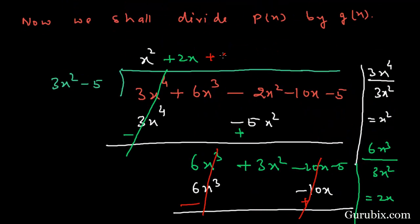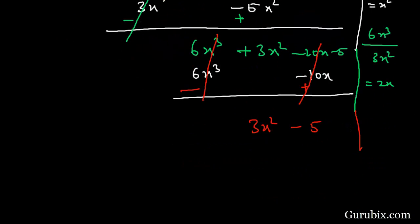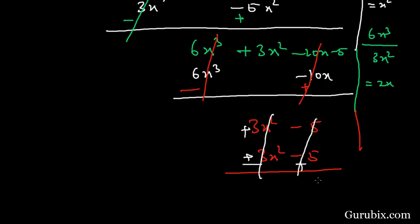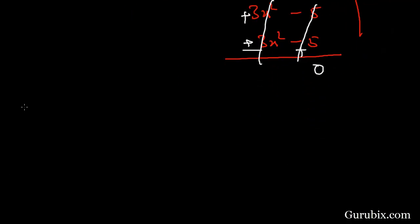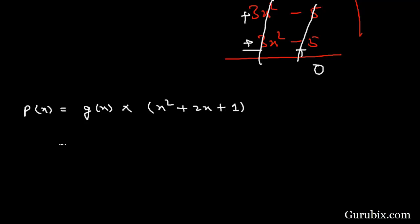The next quotient term is +1. Multiplying 1 by (3x² - 5) gives 3x² - 5. Changing signs, these terms cancel completely, and the remainder is 0. Therefore, by the division algorithm, P(x) = G(x) × (x² + 2x + 1), where G(x) = 3x² - 5.